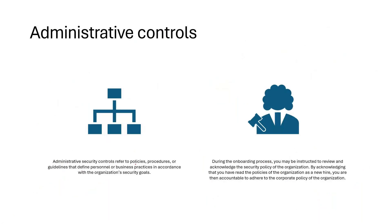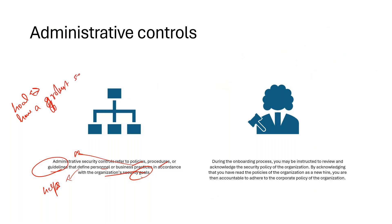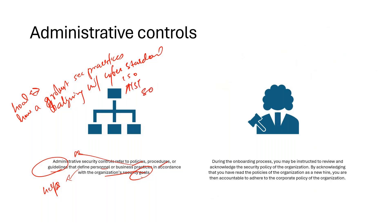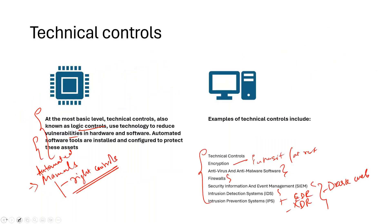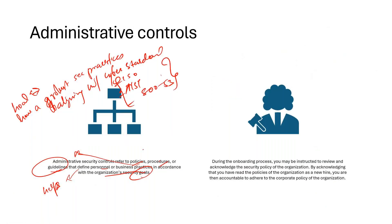Administrative controls relate largely to the policies, procedures, or guidelines that define and help personnel conduct business practices in accordance with security goals. Say my security goal is to have robust security practices aligning with industry cyber standards like ISO, NIST CSF, or NIST 800-53. If my goal is this, then I really need to have properly defined policies, procedures, and guidelines, along with technical controls and physical controls.